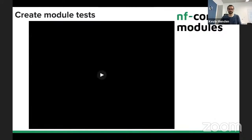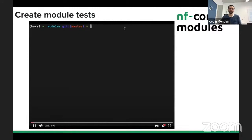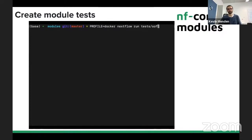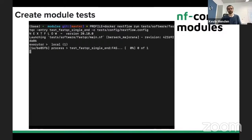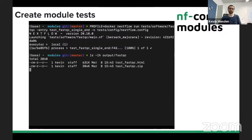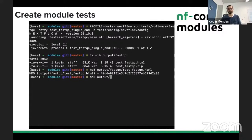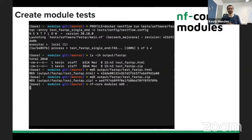Here we'll try to run a module. You first define a profile - in this case we use Docker. Then, as usual, use Nextflow run pointed to your module code and use an entry. We use the test_fastqc_single_end entry, which is the workflow we defined earlier. You always use the test config Nextflow configuration file. This will create the output directory with the outputs of this particular module. Then you can type md5 and generate md5 sums for those outputs, and put those md5 sums into the test.yaml file. Tools available soon will make it easier to create those md5 sums, which is particularly nice if you have not two output files but maybe 20.